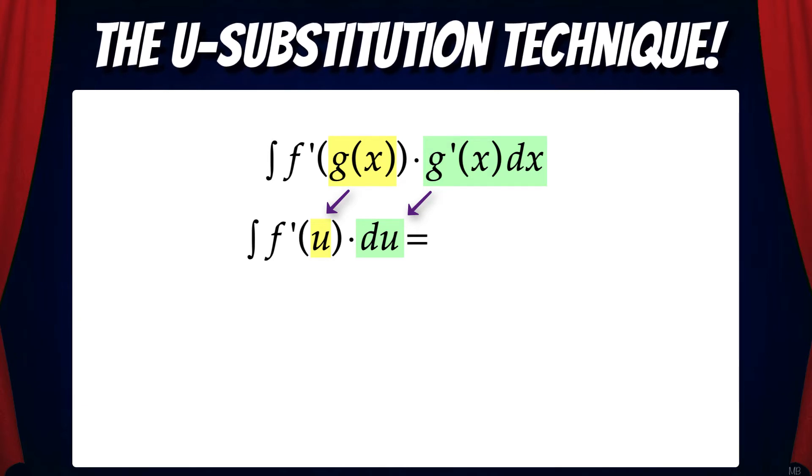This gives us the integral of f prime of u du. And the antiderivative of f prime is just f of the u function plus c. But since u equals g of x, that means the antiderivative is f of g of x plus c.